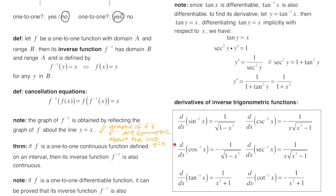Here we have the derivatives of all six inverse trig functions. The derivative of sine inverse is one over the square root of one minus x squared. The derivative of cosine inverse is the same expression but with a negative in front. The derivative of tan inverse is one over x squared plus one. The derivative of cotangent inverse is the same thing with a negative in front. The derivative of secant inverse is one over x times the square root of x squared minus one, and the derivative of cosecant inverse is negative that same expression.